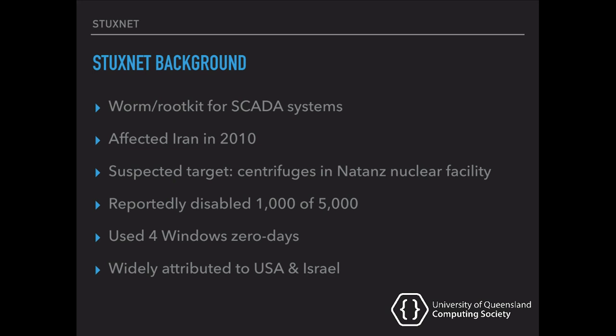So for Stuxnet to have burned four zero days in Windows, each of which might have been worth a hundred grand or more, whoever did this was not only very capable but also very motivated. As to who that was, it's widely attributed to the US and Israel, to the point that the Wikipedia page says this. But no one's ever actually come out and confirmed or denied that officially. Fair warning — we're not going to fire up a sandbox and dissemble binaries. I do security all day; I don't want to do it after five. I have a science degree. Instead, we'll be covering some science and engineering.